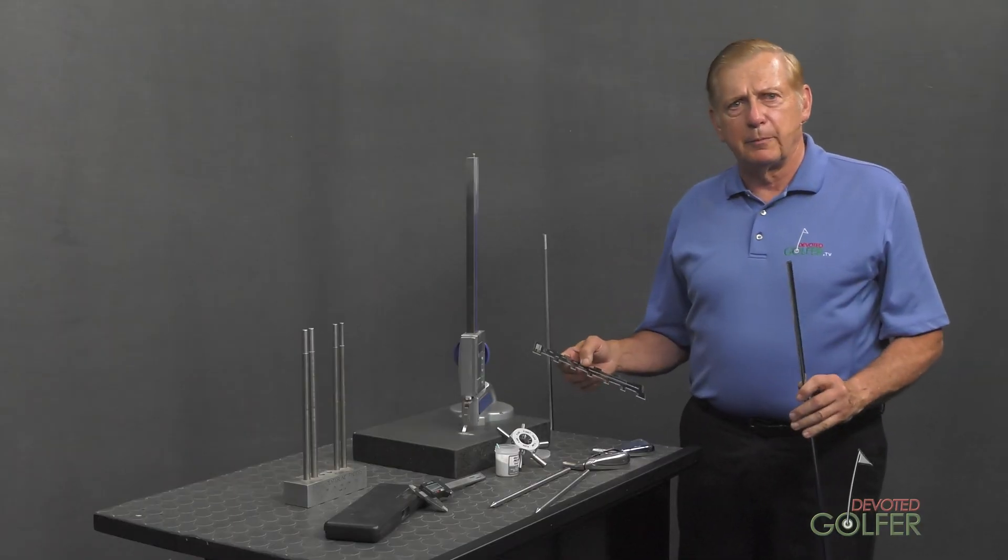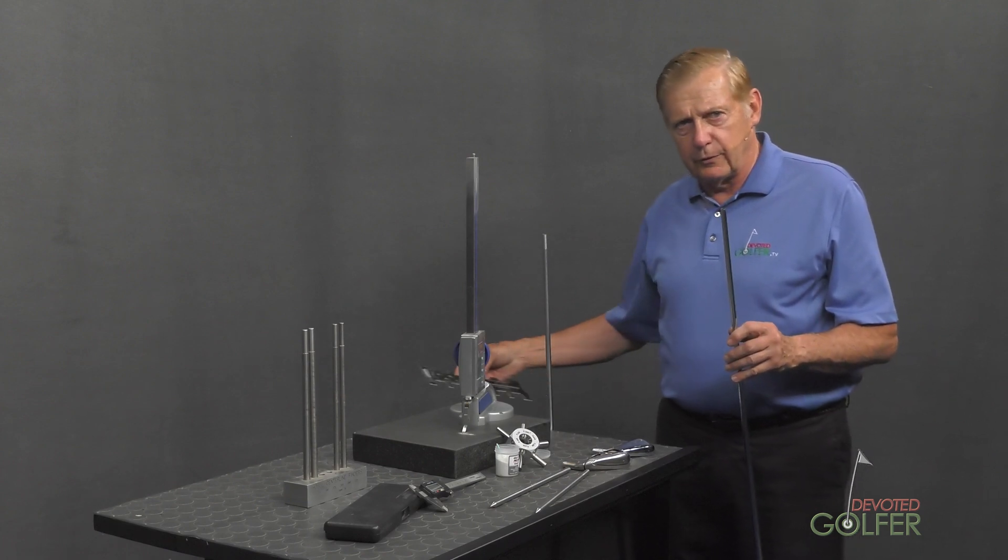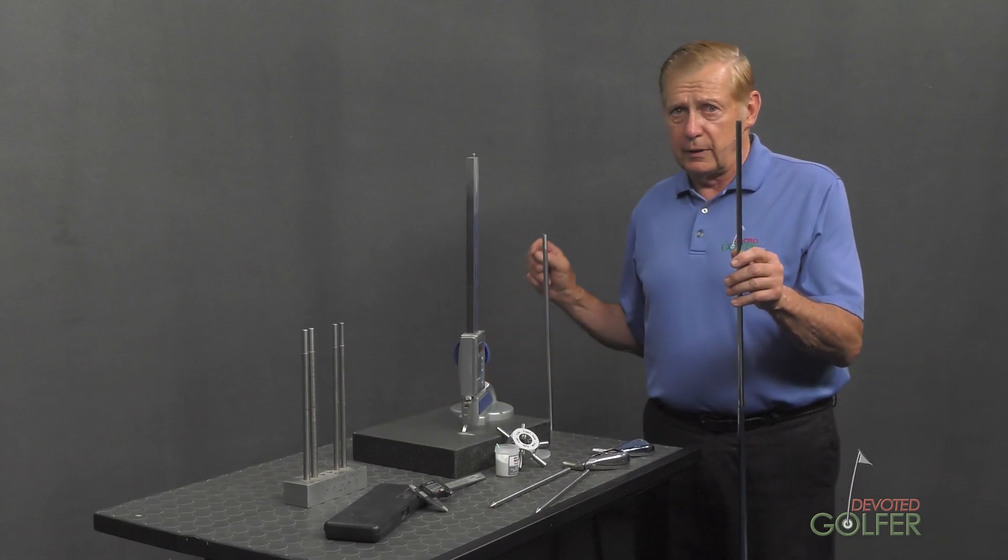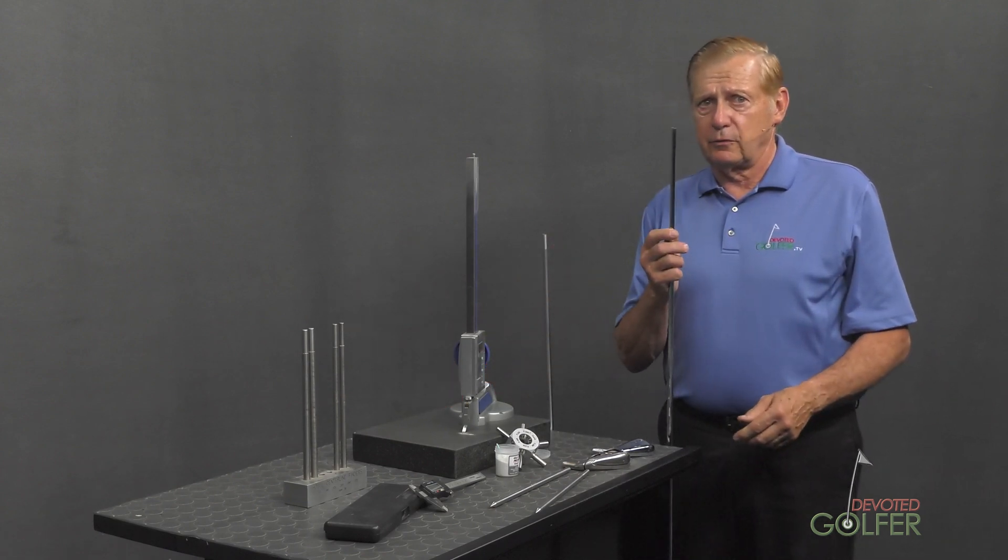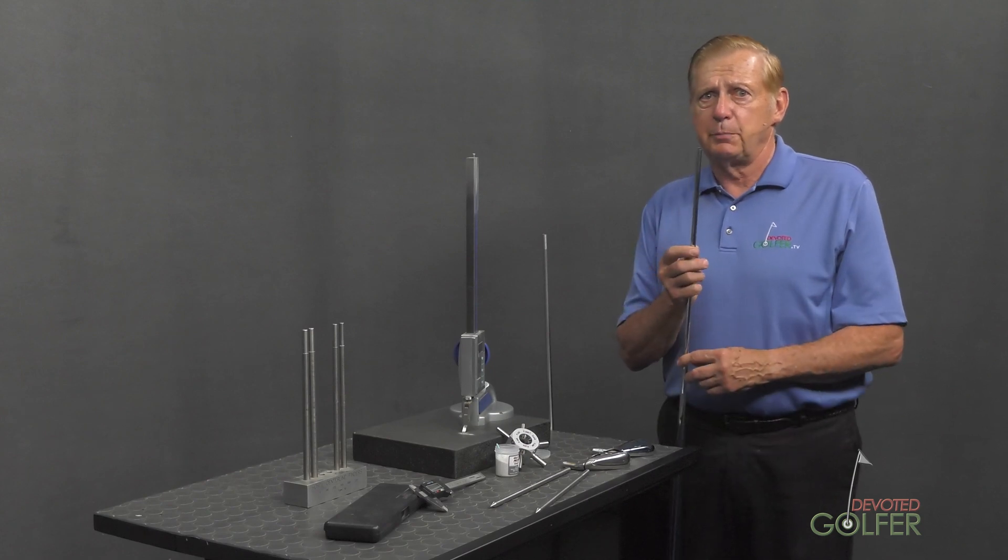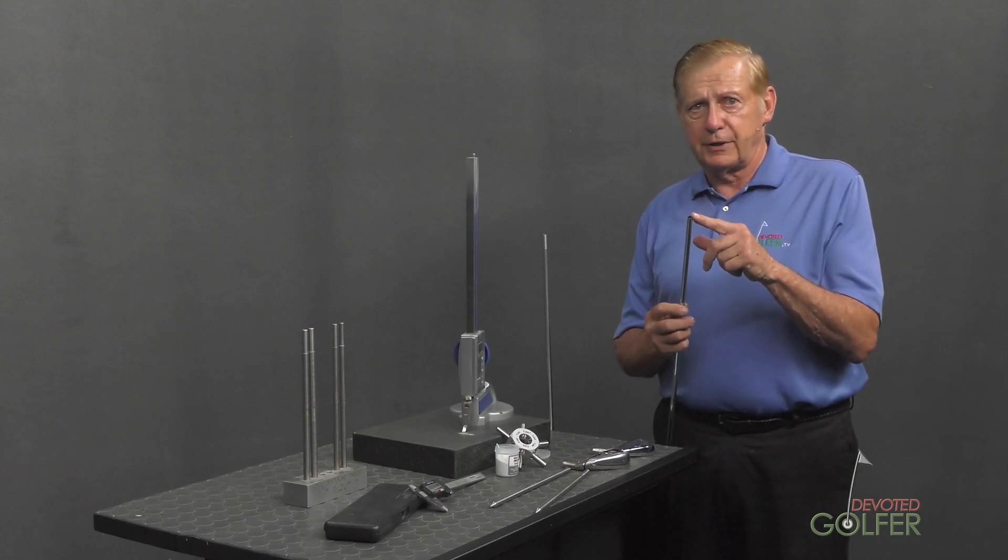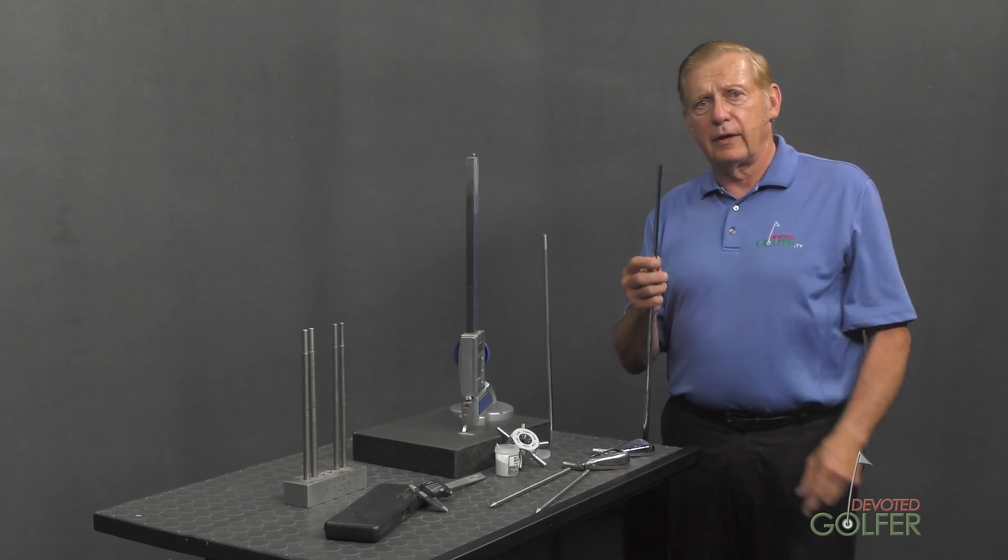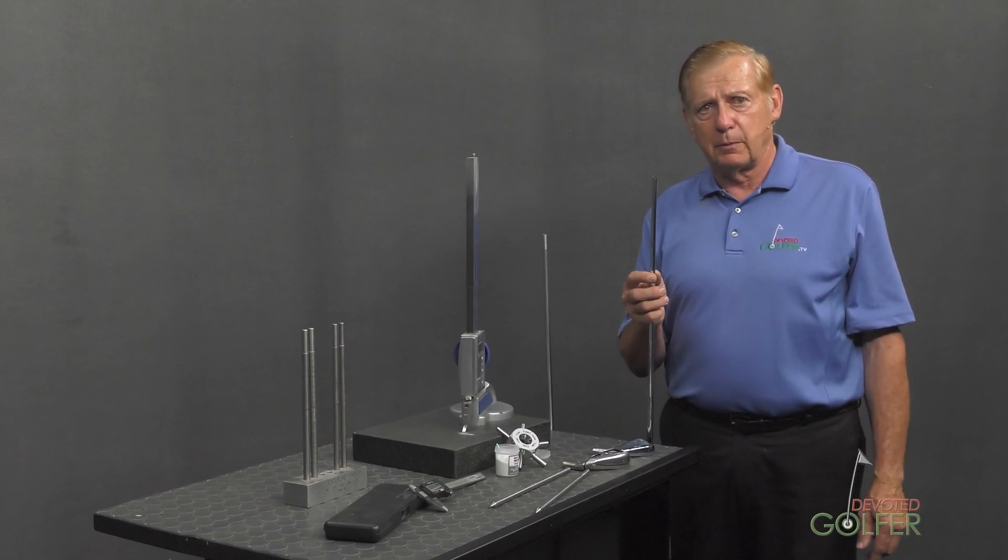You will save assembly time by testing the shaft you're about to glue into a hosel before you apply glue to it. You'll know quickly if it fits or if it's loose. If you do this before you put glue on the shaft tip in the hosel, you won't have to clean them up, fix the problem, and start over.